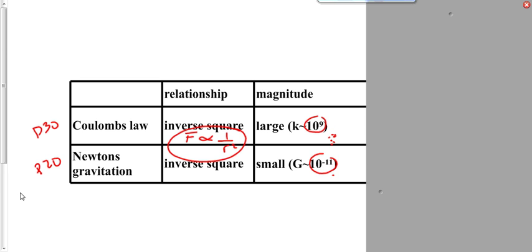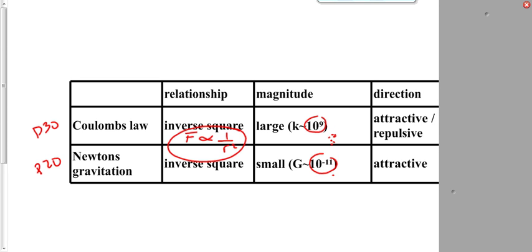And finally, the direction. Well, Coulomb's law is an electric force which can be attractive or repulsive depending upon what kind of charge you have. You only have one kind of mass. Positive mass. You can only get a force of attraction with gravity because there's one kind of mass. With two kinds of charge, you can get attractive or repulsive.